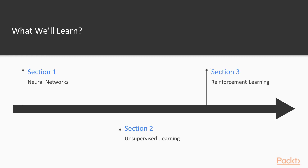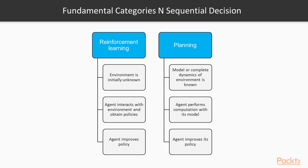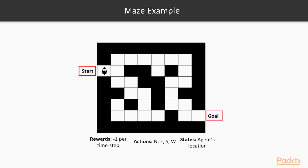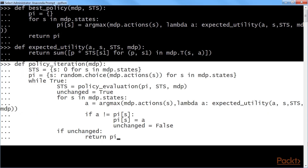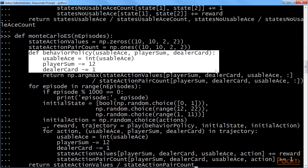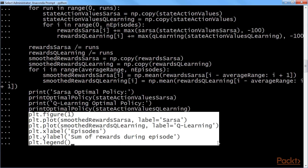Section 3, Reinforcement Learning, provides exhaustive techniques that learn the optimal path to reach a goal over the episodic states, such as the Markov decision process, dynamic programming, Monte Carlo methods, and temporal difference learning.